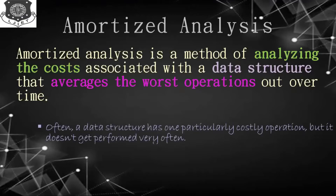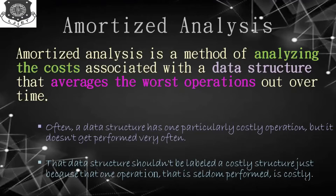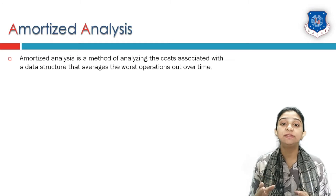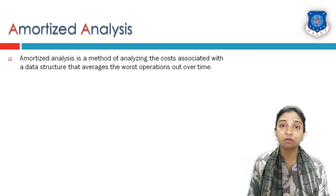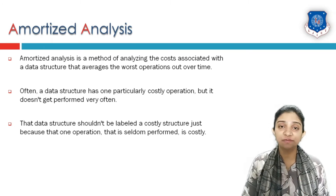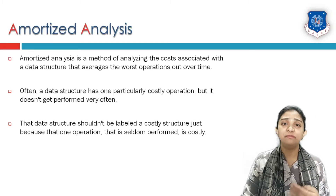Let us assume there is one data structure in which insertion of data is easy, but deletion and searching of data is quite complex. So collectively, how would you characterize that data structure? Is it difficult, easy, or medium? Amortized analysis will help us characterize our data structure — whether it is difficult in its worst operation or not. A data structure shouldn't be labeled as costly just because one operation is very costly and performed only occasionally.